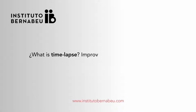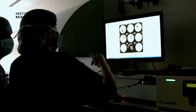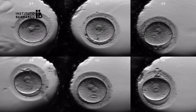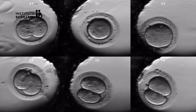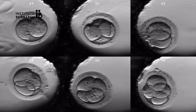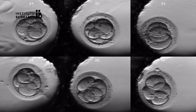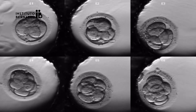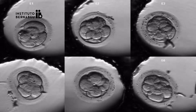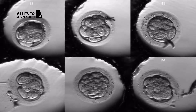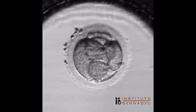What is time-lapse? Improving embryo selection. Time-lapse consists of the continued observation of embryo development so that we can record a video of its evolution without having to make occasional observations under the microscope. This means that it's not necessary to take the embryos out of their incubators, which allows us to guarantee stable culture conditions during the development period until the blastocyst stage.